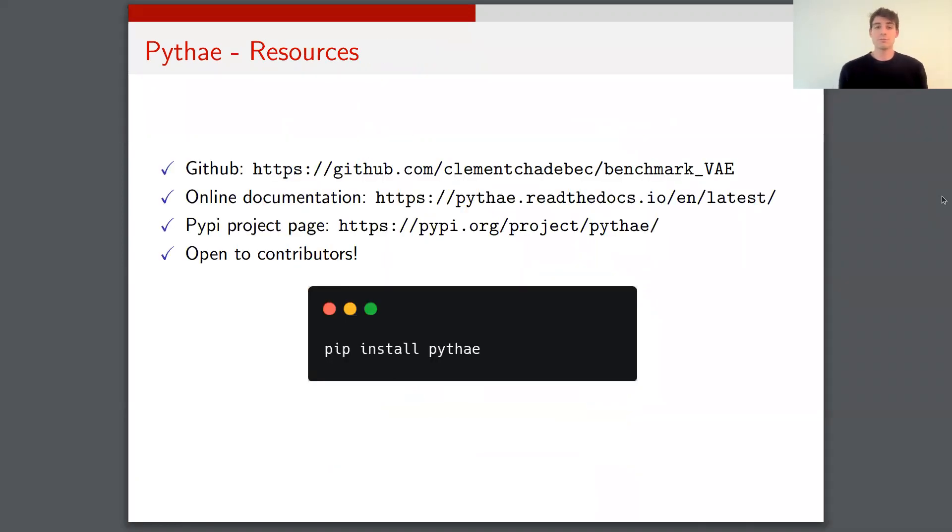Finally, there are different resources that you may need to get your hands on the code. So basically the code is available on GitHub at that link. You will also find an online documentation. The library is available on PyPI and can be installed with that command line. And I want to stress that the library is also open to contributors. So if you want to contribute a new model, a new sampler, or simply fix a bug, I would be very happy to help you in that direction.